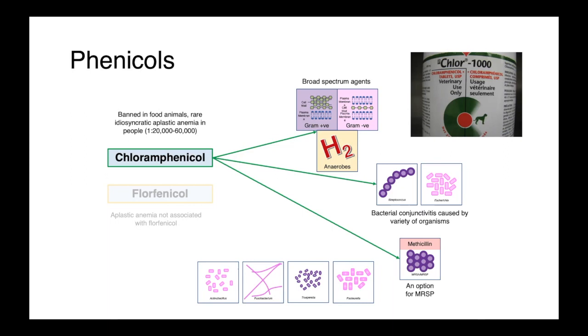This aplastic anemia is essentially a shutting down of erythropoiesis, so the bone marrow stops making red blood cells, and this is unfortunately fatal in 50% of cases. It's non-dose dependent, so it's not like a patient starting to have aplastic anemia can stop taking the treatment and recover.